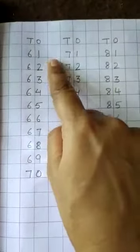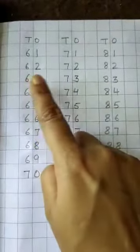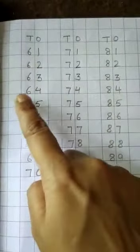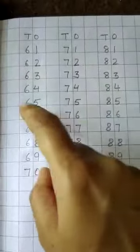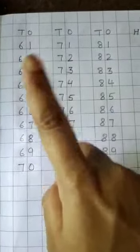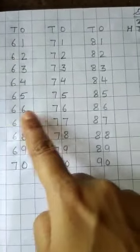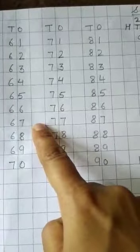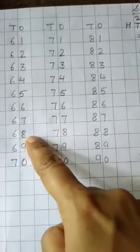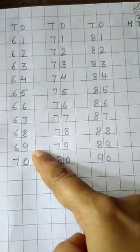61, 61. 62, 62. 63, 63. 64, 64. 65, 65. 66, 66. 67, 67. 68, 68. 69, 69. 70, 70.